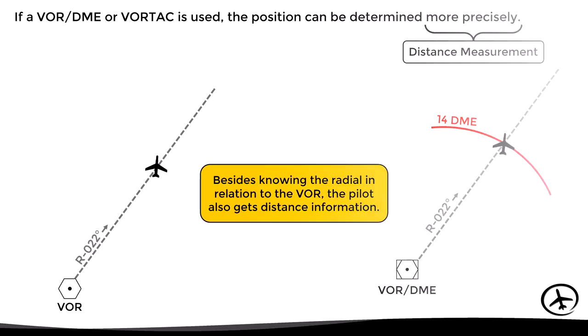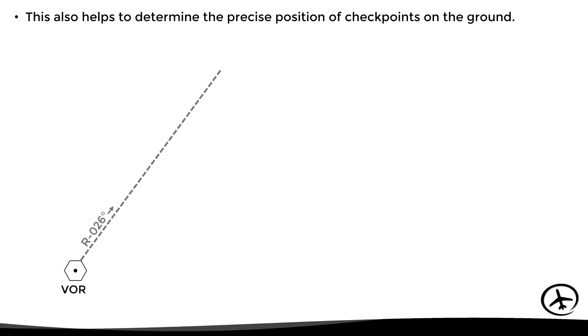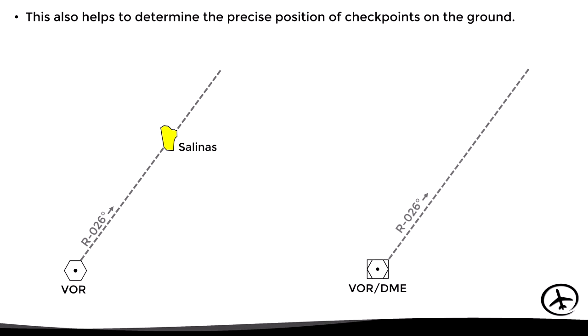This same principle can also be used to determine the exact position of visual checkpoints on the ground. Here for example, if we are determining the position of a town using a VOR without DME, we know the radial but not the distance, so that town could be at multiple positions. On the other hand, if we use a VOR DME, then we can figure out the exact position of the town in terms of a radial and a distance from the station.